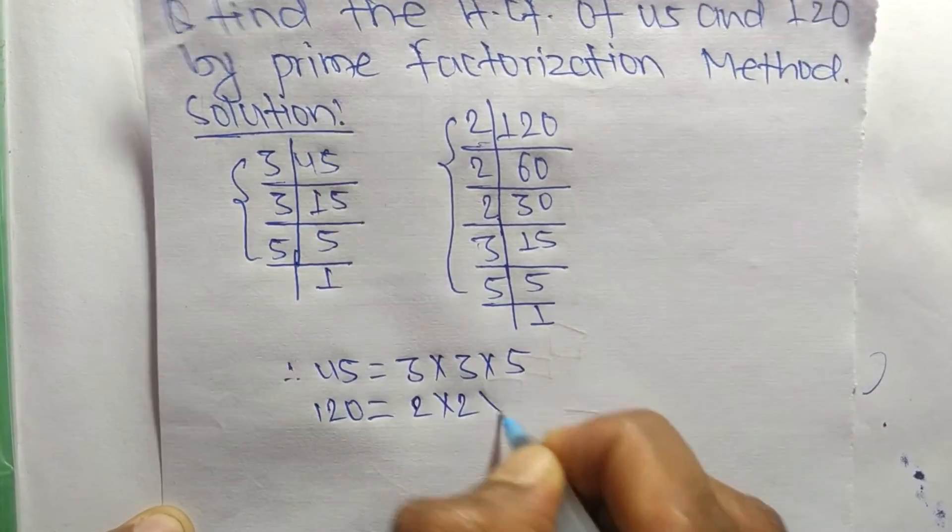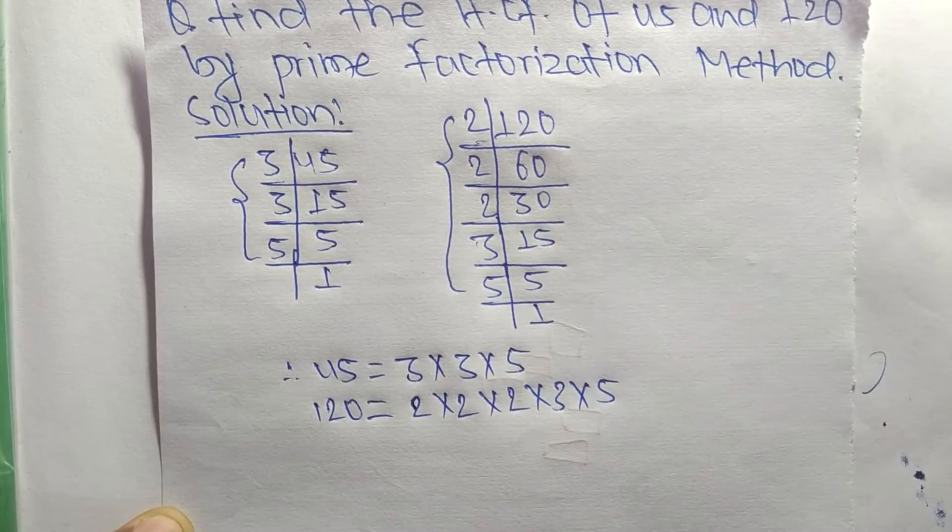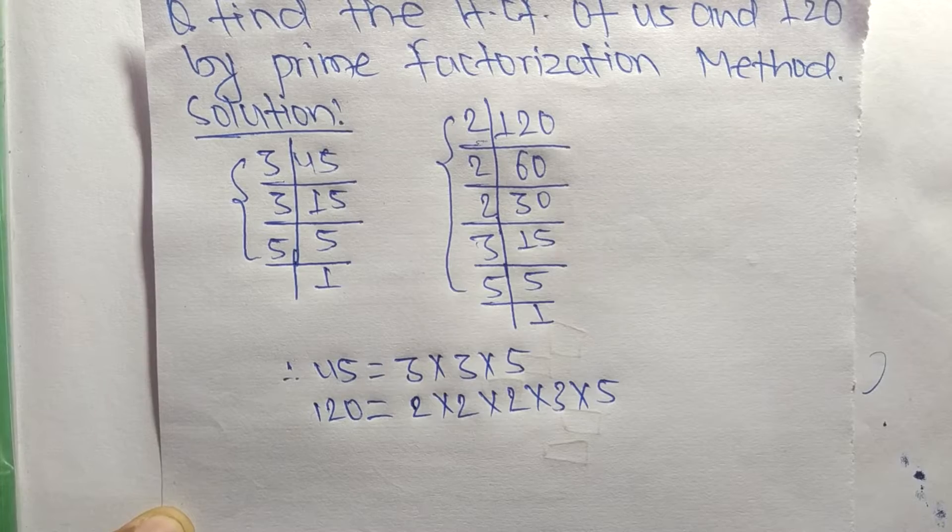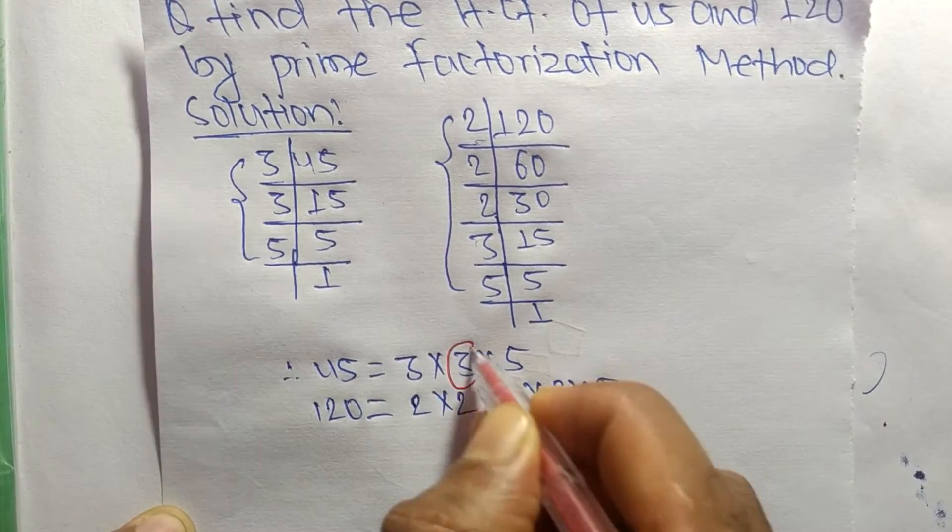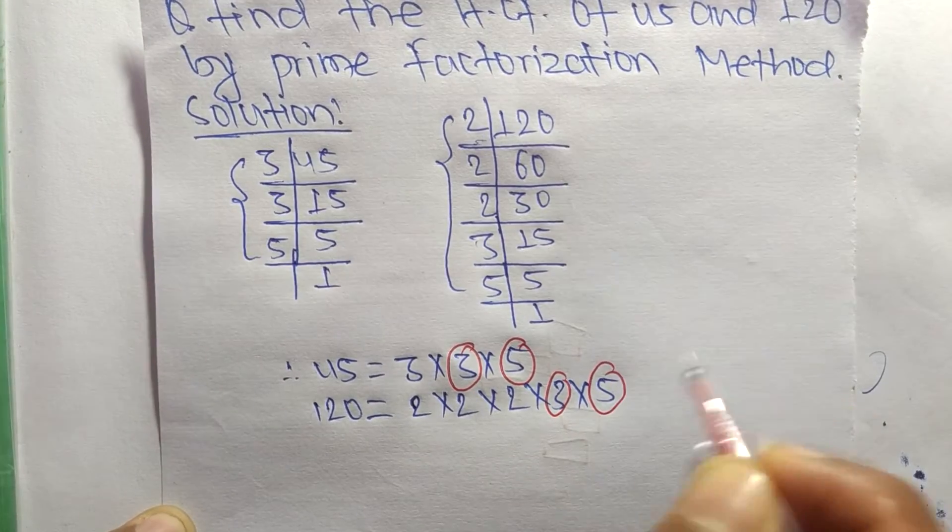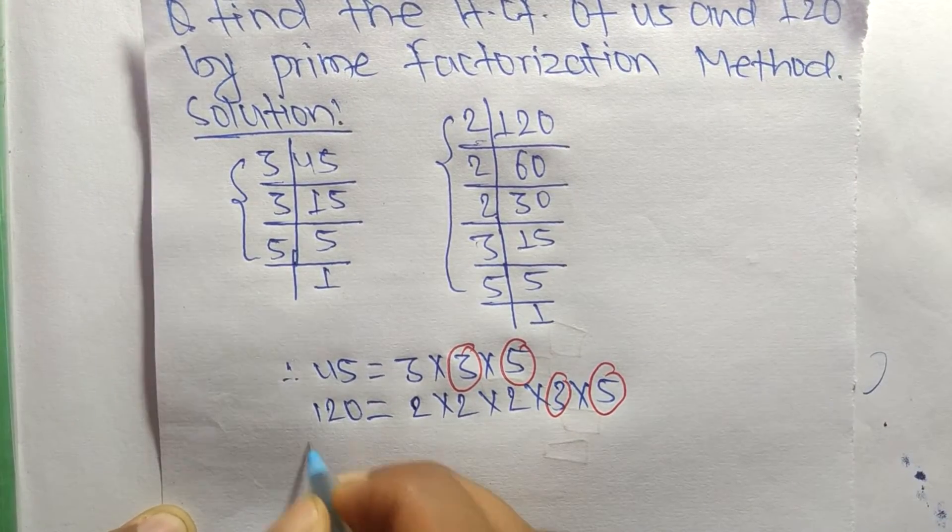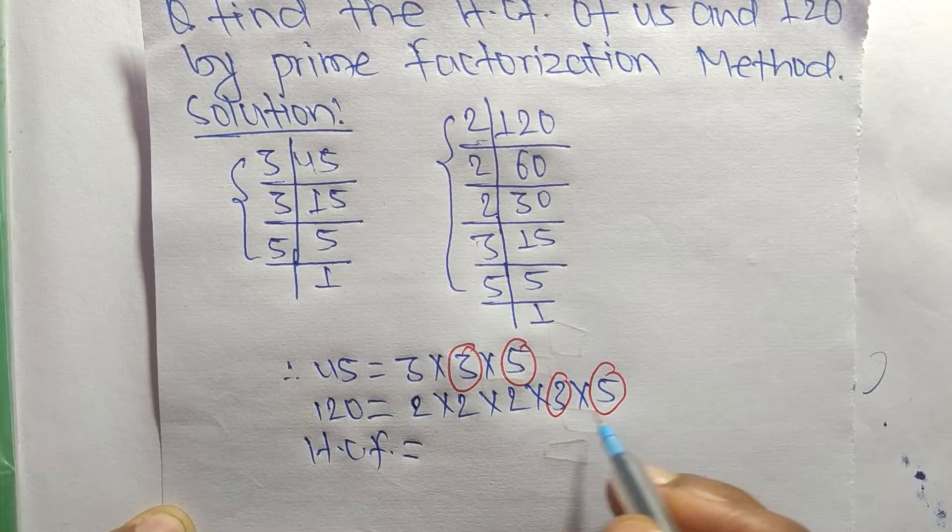So now we find out the common factors in these prime factors. The common factors here are 3 and 5. So the HCF is equal to the product of common factors, which are 3 and 5.